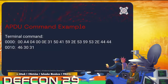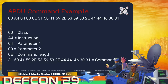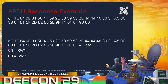Let's analyze an APDU command example. This is the first command that the terminal sends to the card. If we analyze it separately, we can see the class, the instruction, parameter 1, parameter 2, the command length, and then the command itself. In the card response we have the data, and after that is the trailer. In this particular example, the trailer is 90 00, which means the previous command was executed correctly.